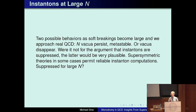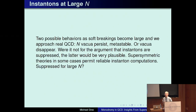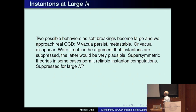Now I want to talk about instantons in these theories, taking us back to 1983 and things Nati and I understood at that time. The story described up to now suggests two possible behaviors as the soft breakings become large. We've seen that the N branches are associated with breaking of the discrete symmetry. As we crank up the explicit breaking, we might wonder whether the N vacua persist. Were it not for the argument that instantons are suppressed, it would seem quite plausible that the branches disappear. Supersymmetric theories in some cases permit reliable instanton computations, and we can ask whether they're suppressed for large N.